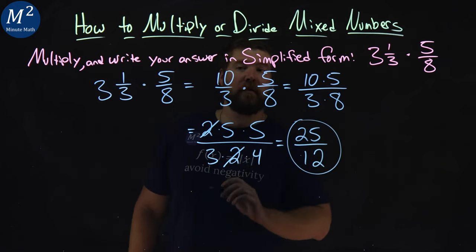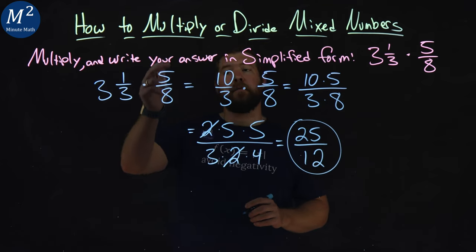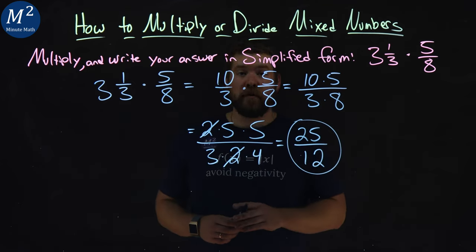And there we have it. Our simplified form of three and one-third times five-eighths is twenty-five over twelve.